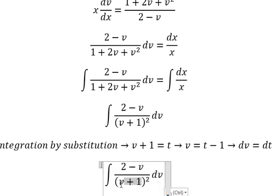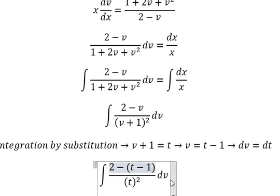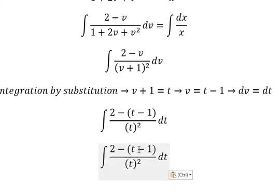So this one we change for t. V we change for t minus 1, dv we change for dt.